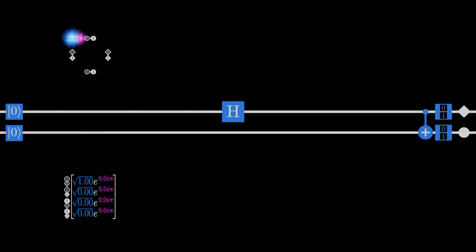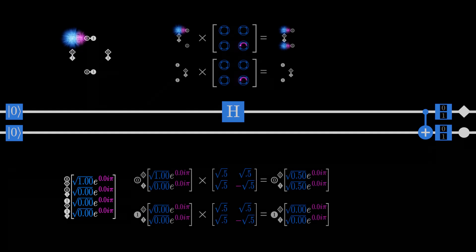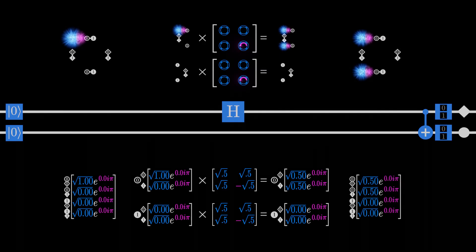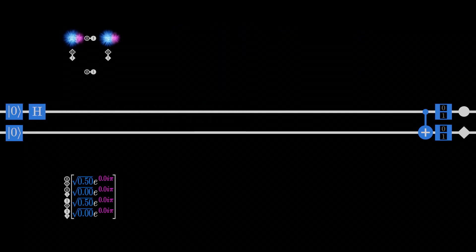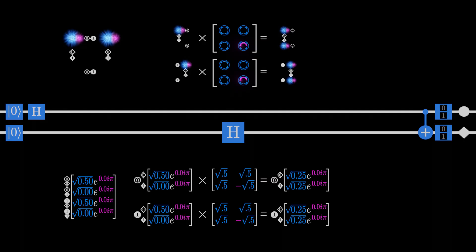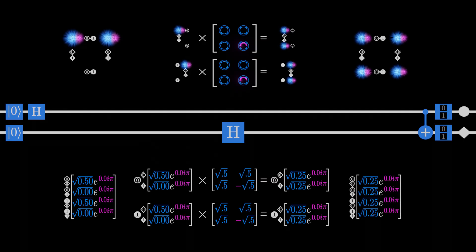In the case of the circuit at the start of the video, the H gate is simply working to create a state where the first qubit is equally likely to be 0 or 1. If we put an H gate on the second qubit as well, we'd get a state where all outcomes are equally likely.